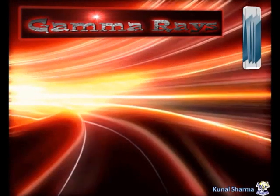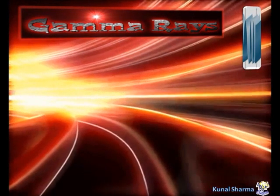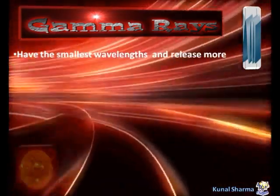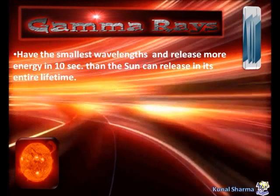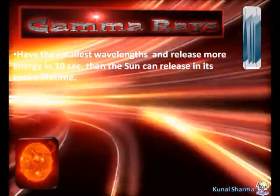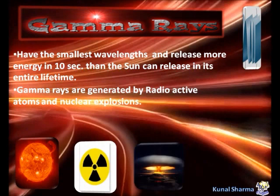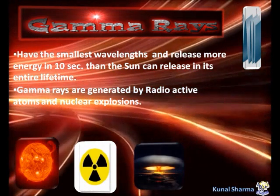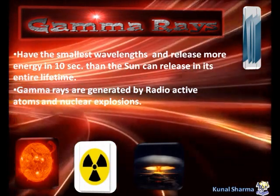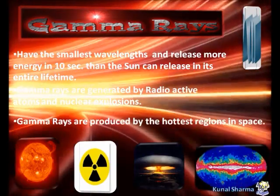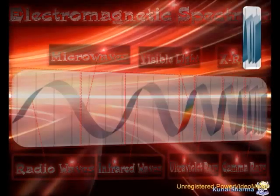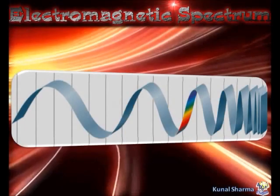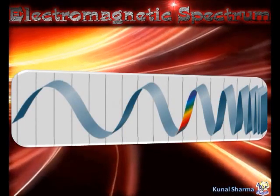Gamma rays. Gamma rays have the smallest wavelengths and release more energy in 10 seconds than the Sun can release in its entire lifetime. Gamma rays are generated by radioactive atoms and nuclear explosions. Gamma rays are produced by the hottest regions in space, and that is the electromagnetic spectrum.